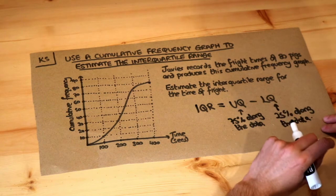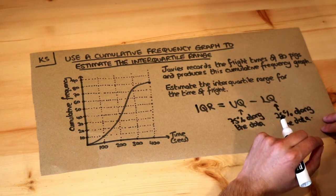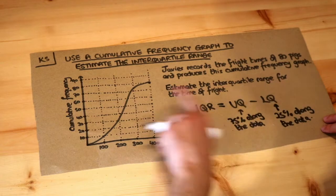Now a cumulative frequency graph makes it really easy for us to read off that value. We've got 80 pigs.